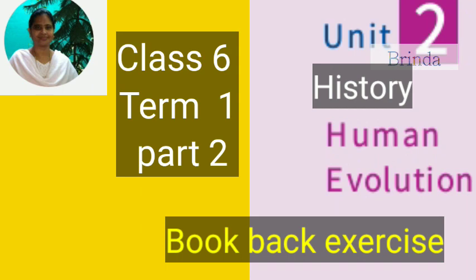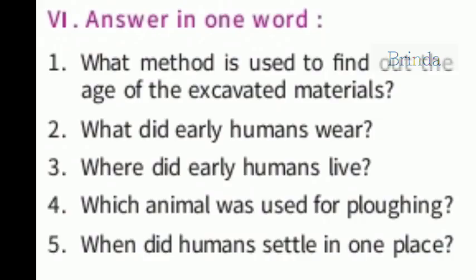Textual exercise. Dear children, in the previous episode we have seen Roman numbers 1 to 5 — meaning the true or false section we have already dealt with. Now we are going to do the question and answers. Shall we see? Answer in one word.